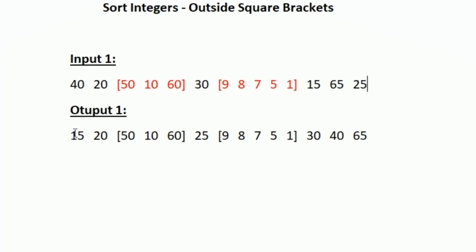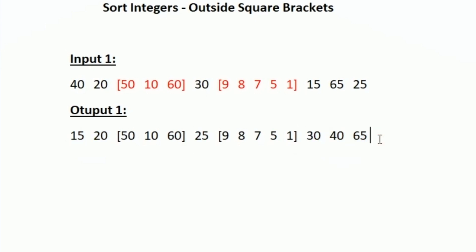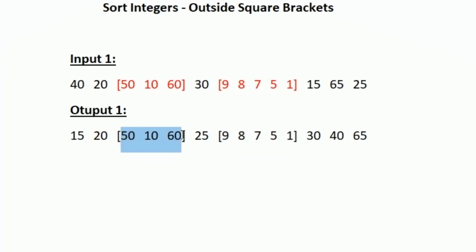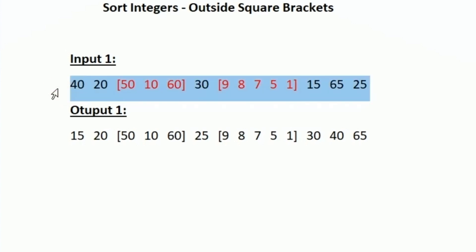After sorting, the modified output will look like this. The smallest integer outside the square bracket is 15, so first we print 15, then 20, then the square bracket as-is, then 25, 30, 40, and 65 — printing the integers in ascending order. The values inside the square bracket remain unchanged and their positions stay the same.